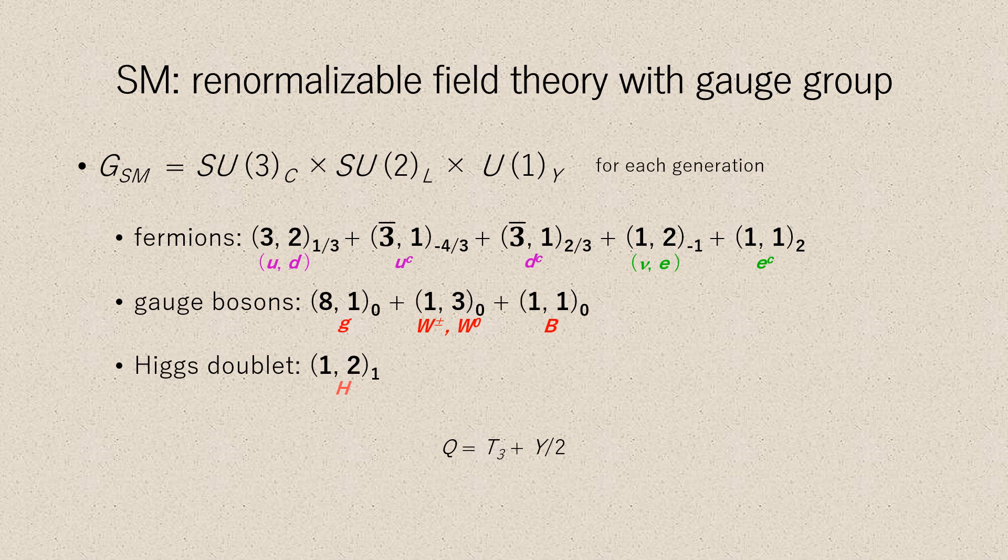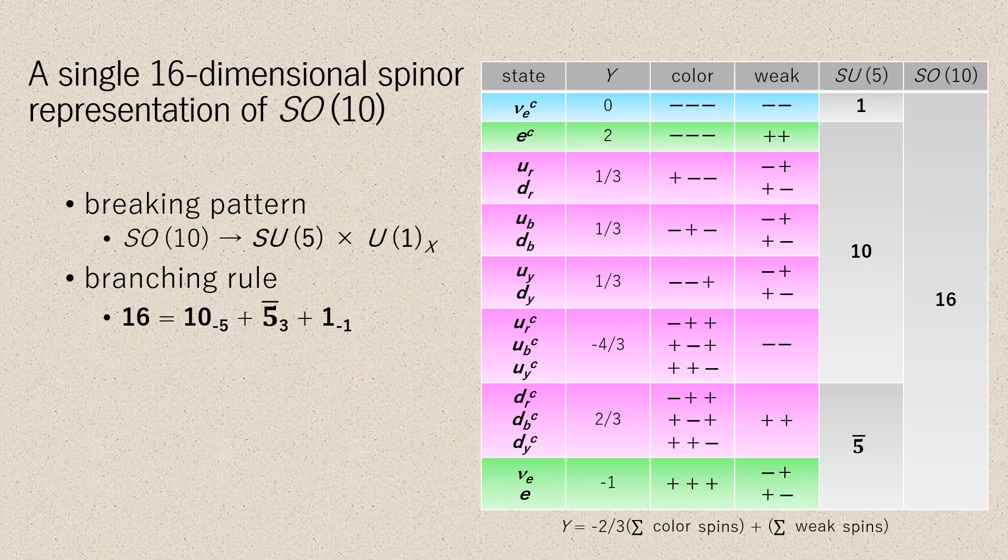Especially after the recent discovery of the Higgs in 2012, this model is remarkably complete and consistent with almost all experimental data. A single 16-dimensional spinor representation of SO(10) accommodates a full standard model generation together with an extra singlet, potentially providing a right-handed neutrino. This is most easily understood from the breaking pattern SO(10) goes to SU(5) × U(1)_X and the associated branching rule. Here the indices refer to charges under the U(1)_X subgroup. The table presents the states of one family of quarks and leptons as they appear in the 16.